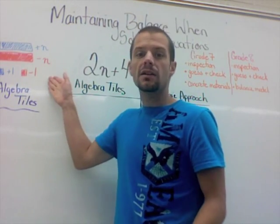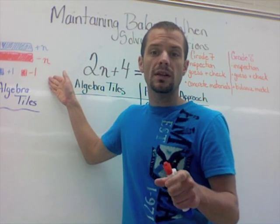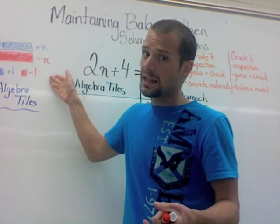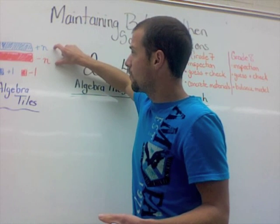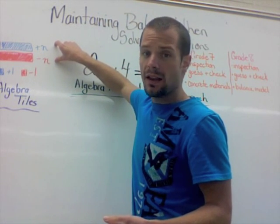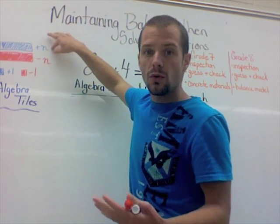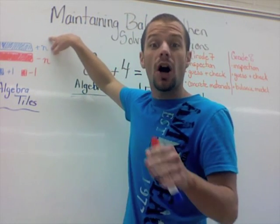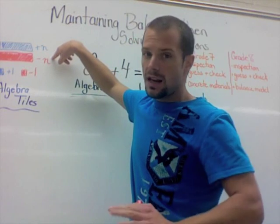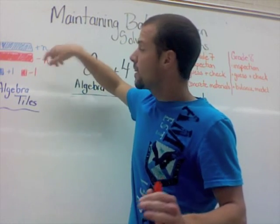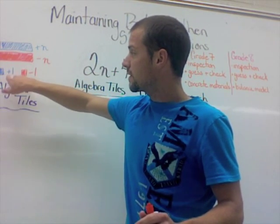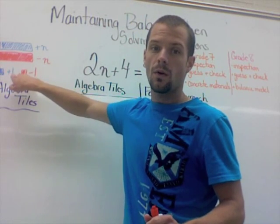When you get a set, your sets will look yellow on one side and red on the other side, just like integer chips. You'll have rods, flat rods like this, that represent n or an unknown number. The blue or yellow is going to be positive. Your reds in both sets are going to be negatives. The little squares are units - a positive one or a negative one.